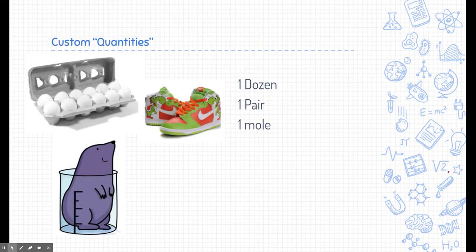Now, the mole is a custom quantity and you're used to custom quantities — you just might not realize it. For example, if I say one dozen, you're probably familiar with one dozen meaning 12 things. Typically we use that with eggs, but we can use it with anything — a dozen people or a dozen pairs of scissors. That custom quantity always invokes, when I say a dozen, it always makes you think of 12 things.